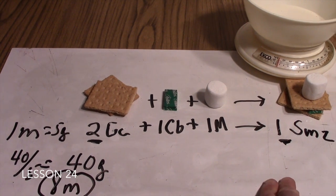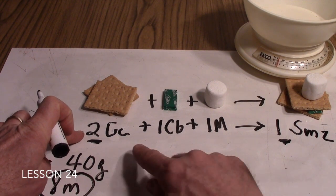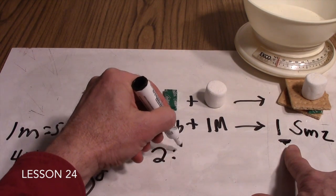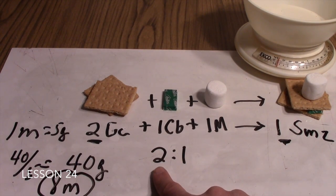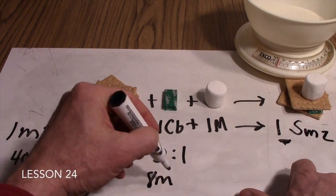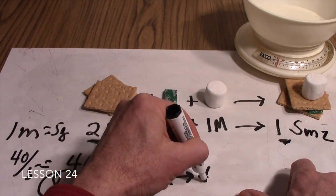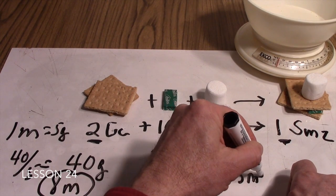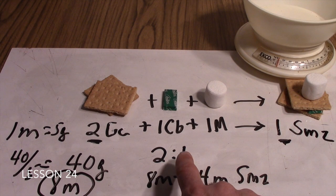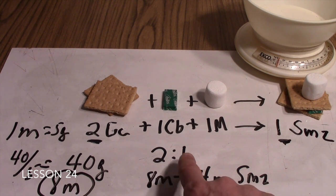We know the ratio between graham crackers and s'mores is a 2-to-1 ratio. For every 2 we put in, we get 1 out. If we put 8 moles into our reaction, we are going to get 4 moles of s'mores out, because it takes 2 to make 1.